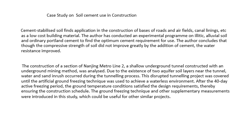The construction of a section of Nanjing Metro Line, a shallow underground tunnel constructed with an underground mining method, was analyzed. Due to the existence of two aquifer soil layers near the tunnel, water and sand inrush occurred during the tunneling process. This disrupted tunneling project was stalled until the artificial ground freezing technique was used to achieve a waterless environment. After the 40-day active freezing period, the ground temperature conditions satisfied the design requirements, thereby ensuring the construction schedule. The ground freezing technique and other supplementary measurements were introduced in this study, which could be useful for other similar projects.